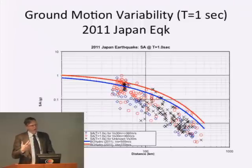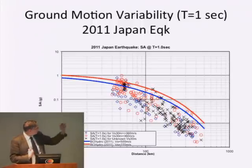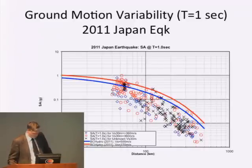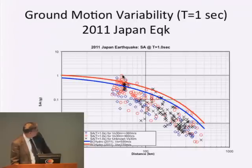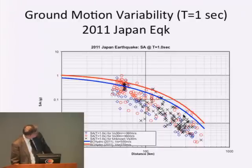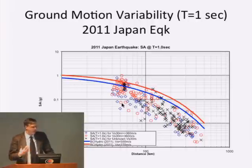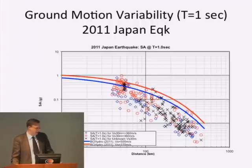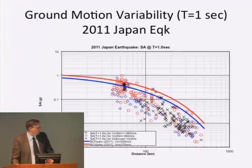The key feature in all of this is variability of ground motion. This is a plot of the ground motion data from all the stations in Japan. On the x-axis is the distance away — 50 kilometers is right along the shoreline above the rupture, 100 kilometers away, and so forth. The y-axis is the spectral acceleration, shown at a period of one second. What you see is that at a given distance from the rupture, even close in, there's about a factor of 10 variability in the strength of shaking. We've seen this over and over in California earthquakes as well.